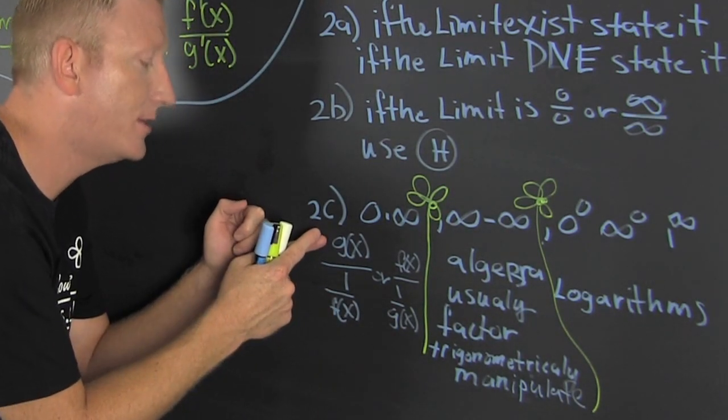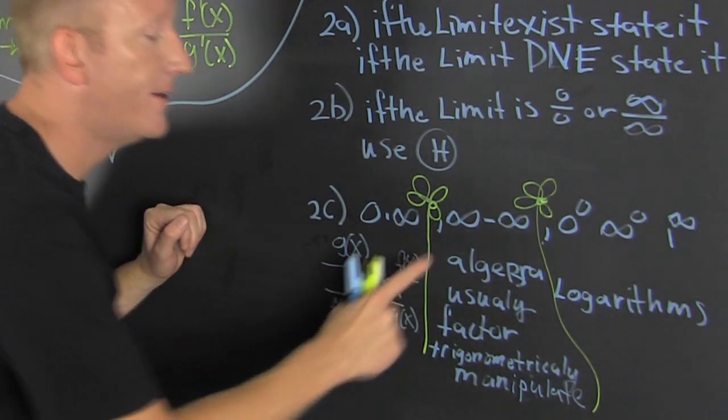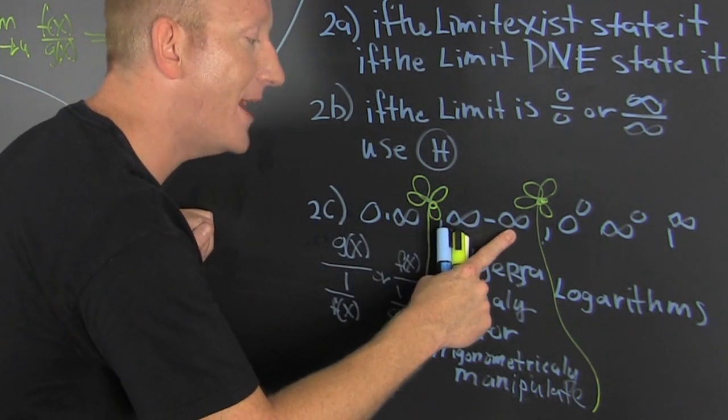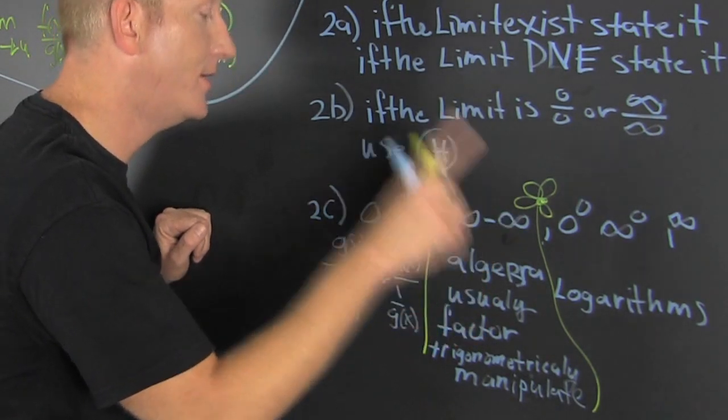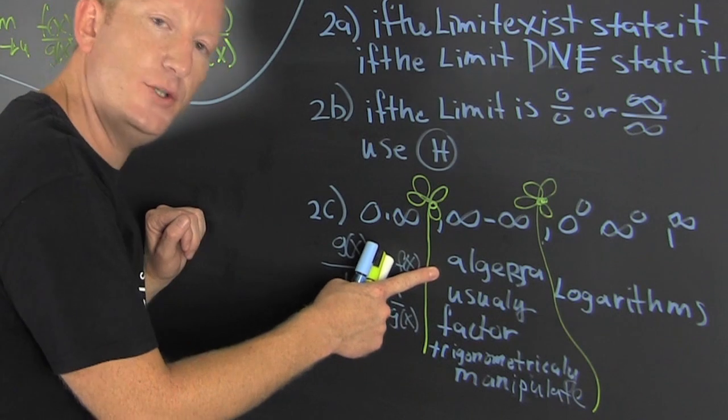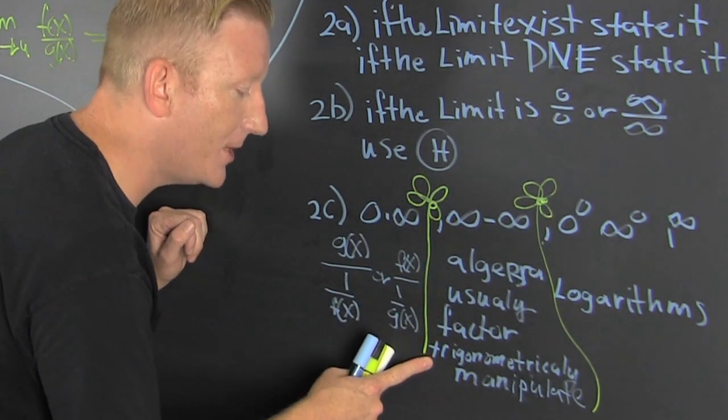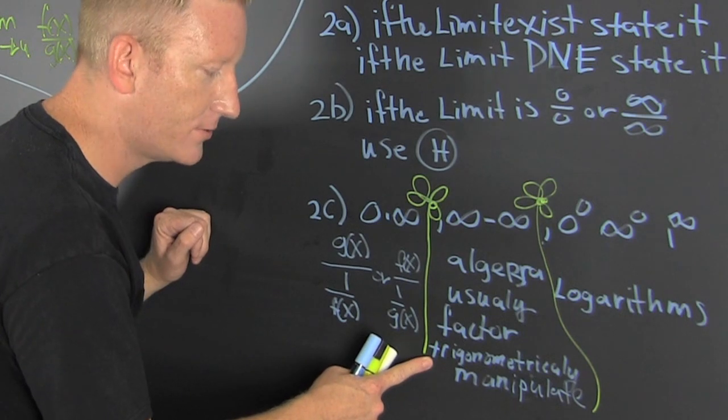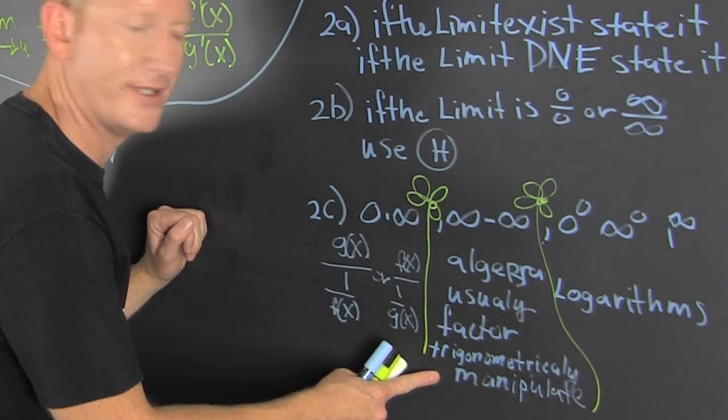But there's more. If you have infinity minus infinity, you don't know which one of those infinities is bigger, so you're usually going to use algebra, factoring, or some trigonometric manipulation on that fraction. Those are big words. I don't even know if I spelled them right.